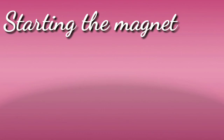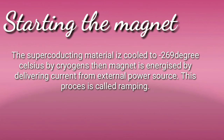To start the magnet, we perform a process called ramping. In ramping, the superconducting material is cooled to minus 269 degrees Celsius using cryogens — which are the helium and nitrogen gases. We then deliver current from an external power source. This process is called ramping.